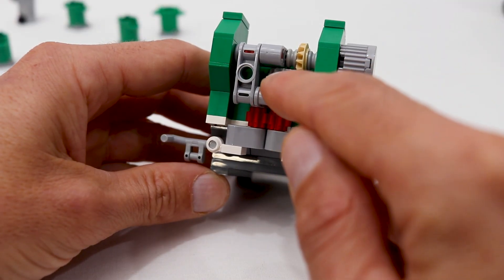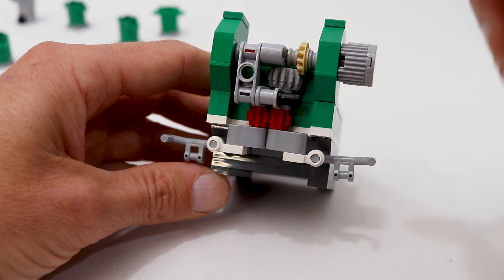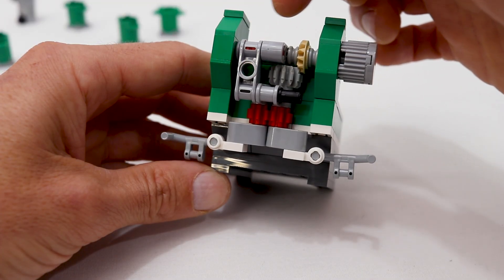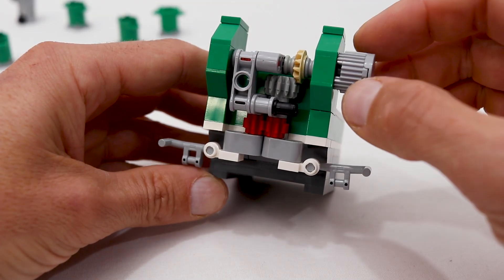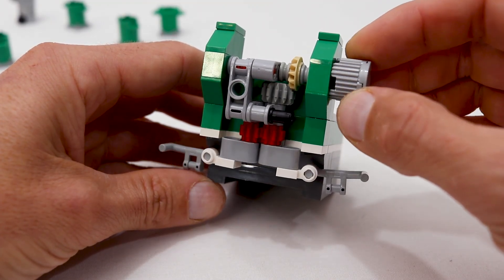One of those axles also has a 12-tooth gear here which is driven by this tan gear on this horizontal drive axle so that we can rotate that drive axle to open and close the arms.